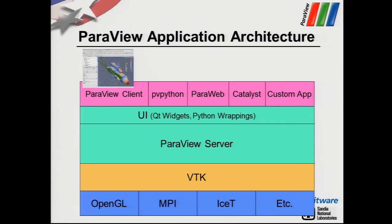ParaView uses a ParaView server and we have the option to run multiple clients. The standard one is the ParaView client, launched when we type 'paraview'. PV Python is the Python client — a standard shell useful for prototyping, but the 3D window is not interactive, so you cannot move your model around, and there is no graphical user interface attached to it.